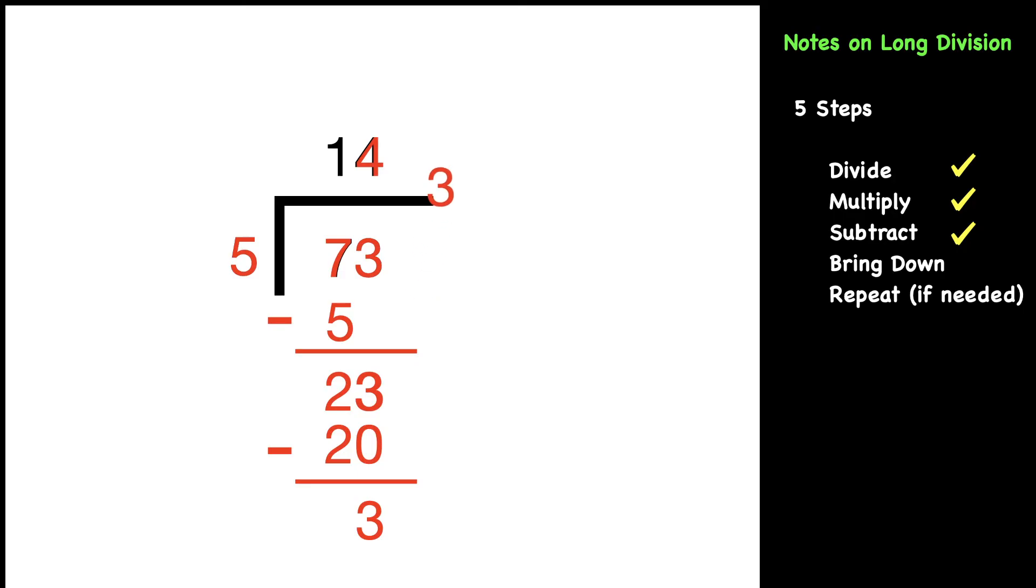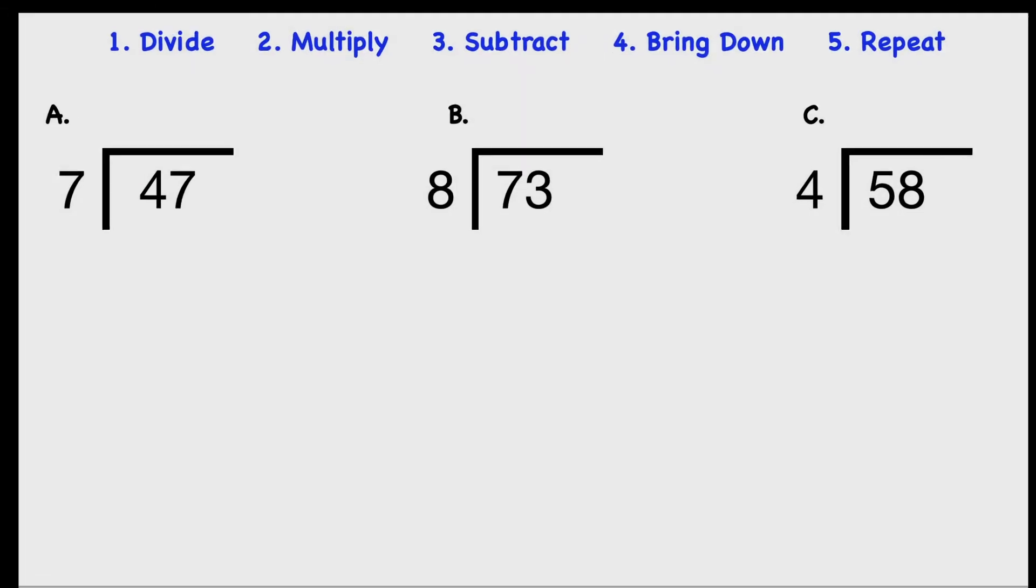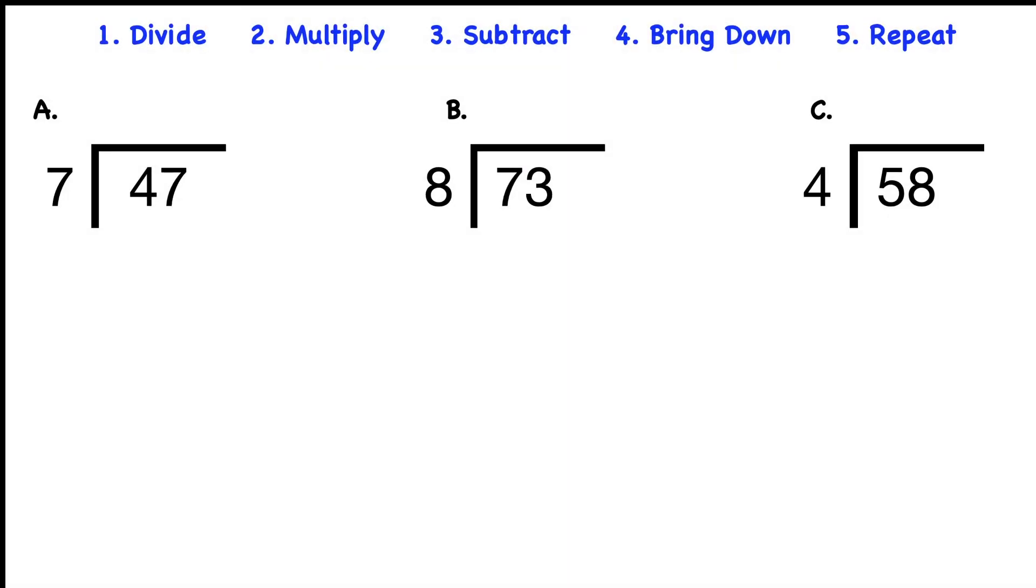That three goes up at the top. When we write that with the R, it's going to be 14 with a remainder of three. Here's three for you to practice using our five steps. Go ahead and pause for a second.